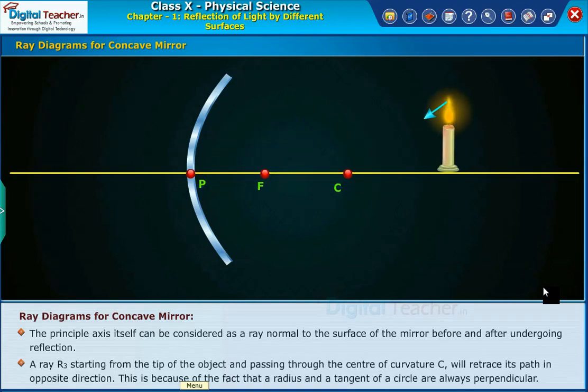A ray R3 starting from the tip of the object and passing through the center of curvature C will retrace its path in opposite direction. This is because a radius and a tangent of a circle are always perpendicular.